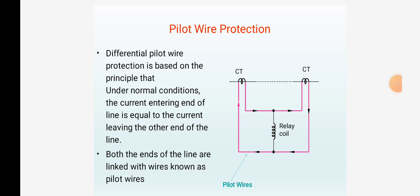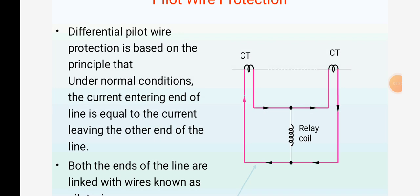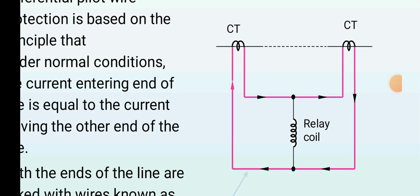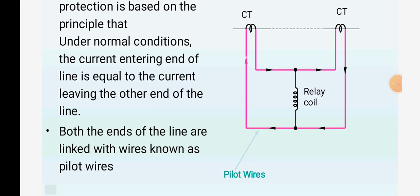Differential pilot wire protection is based on the principle that under normal conditions, the current entering one end of the line is equal to the current leaving the other end of the line. Both ends of the line are linked with wire known as the pilot. The diagram shows two current transformers and the relay coil between them. This line is called the pilot wire.